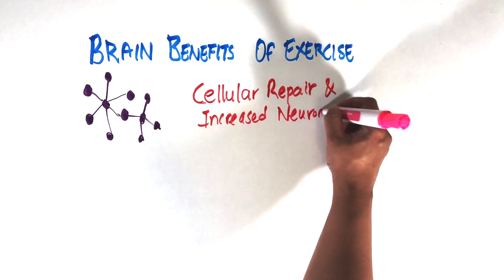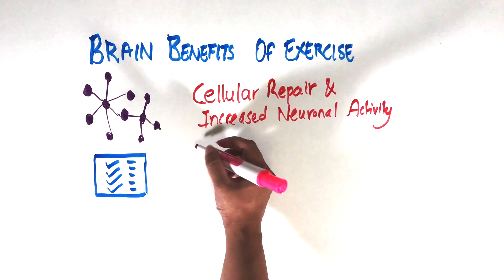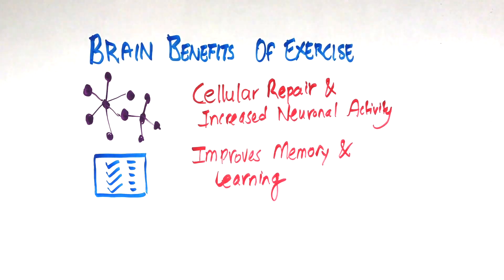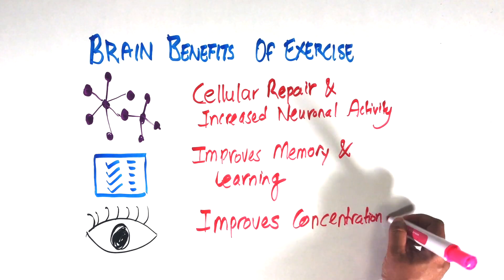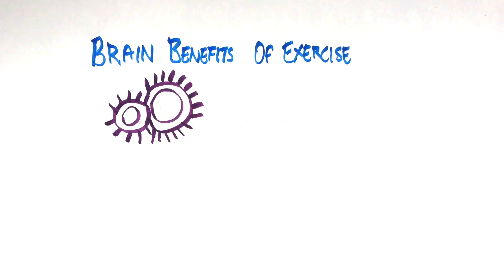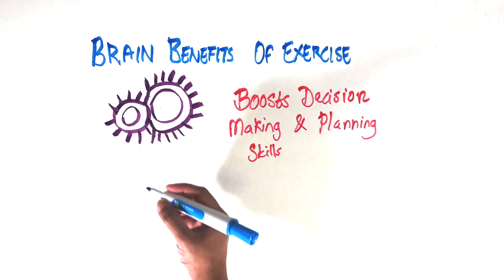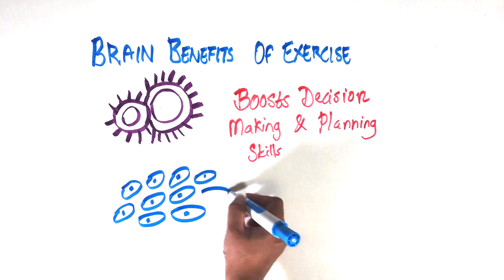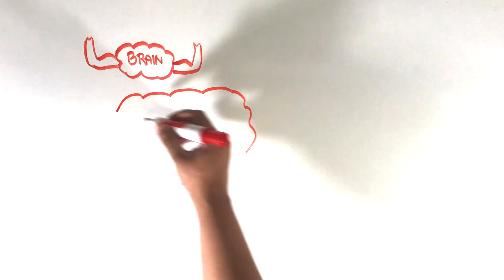Research has proved that there are several benefits of exercise on brain function. Cellular repair and increased neuronal connectivity result in improved learning, memory, and increased attention span. Also, there is significant improvement in decision-making and planning skills. Exercise also promotes growth of new nerve cells and increase in blood flow throughout the brain.